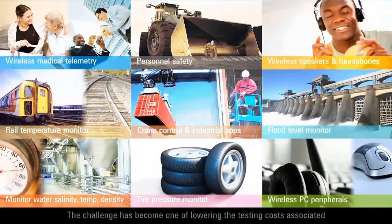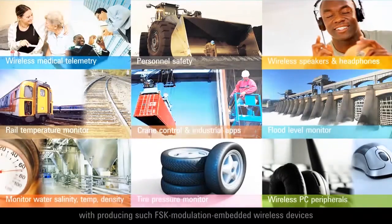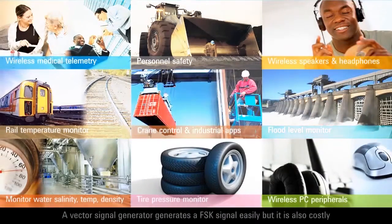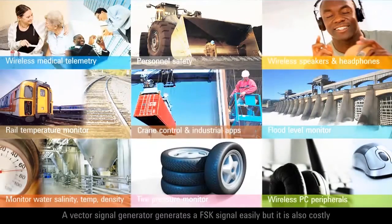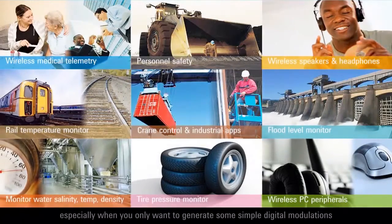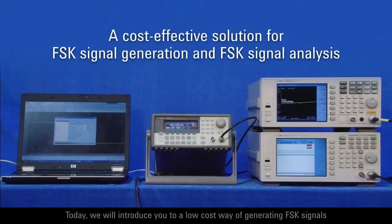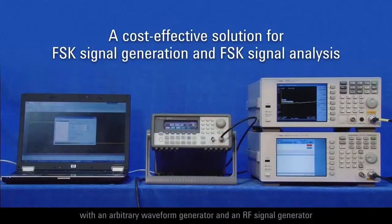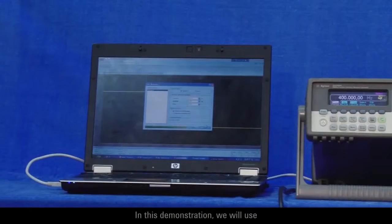The challenge has become one of lowering the testing costs associated with producing such FSK modulation-embedded wireless devices. A vector signal generator generates a FSK signal easily, but it is also costly, especially when you only want to generate some simple digital modulations. Today, we will introduce you to a low-cost way of generating FSK signals with an arbitrary waveform generator and an RF signal generator, and how to analyze the FSK signal with a low-cost spectrum analyzer solution.